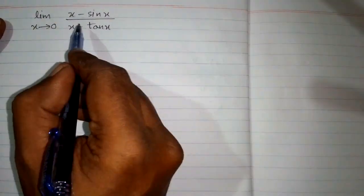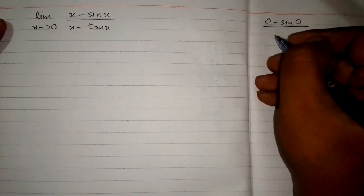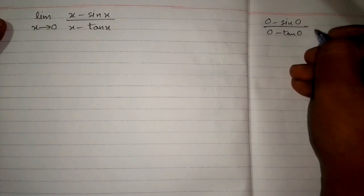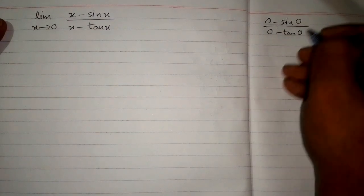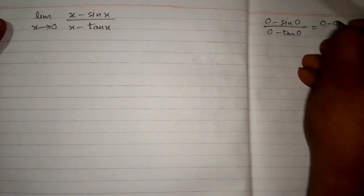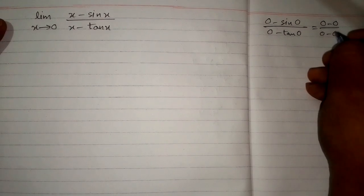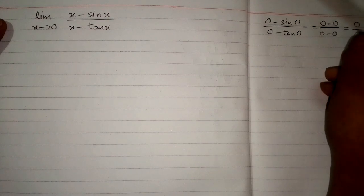So first we will apply the limit directly. We have 0 minus sin(0) upon 0 minus tangent of 0. Since sin(0) is 0 and tangent(0) is also 0, we have the 0 upon 0 form.